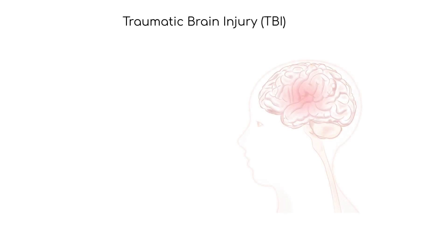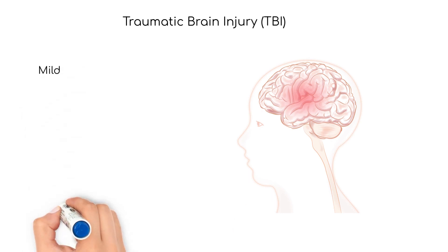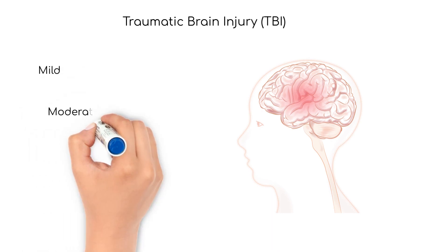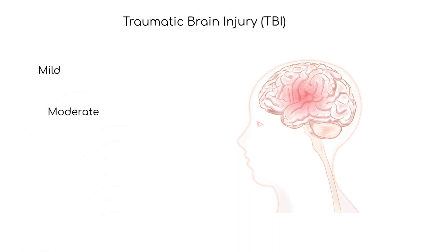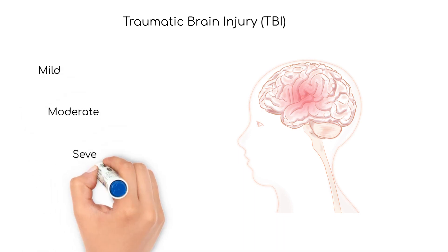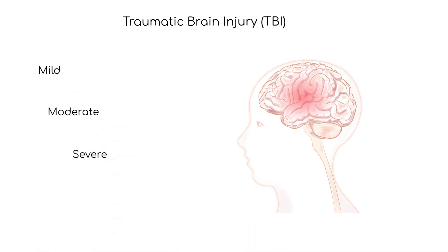Traumatic brain injury can be classified as mild, moderate, or severe. This classification is based on the Glasgow Coma Scale.